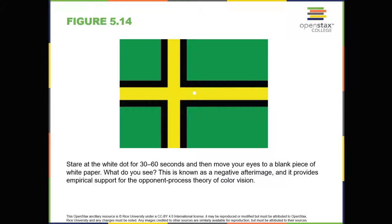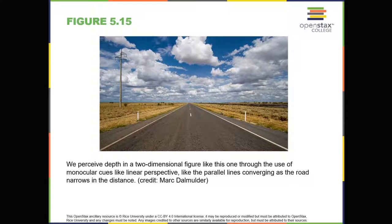Although we rely on binocular cues to experience depth in our 3D world, we can also perceive depth in 2D arrays. Think about all the paintings and photographs you've seen — generally you pick up on depth in these images even though the visual stimulus is 2D. When we do this, we're relying on monocular cues, or cues that require only one eye. We have more monocular cues than binocular cues. An example of a monocular cue would be linear perspective, which refers to the fact that we perceive depth when we see two parallel lines that seem to converge in an image. Some other monocular depth cues are interposition, the partial overlap of objects, and the relative size and closeness of images to the horizon.